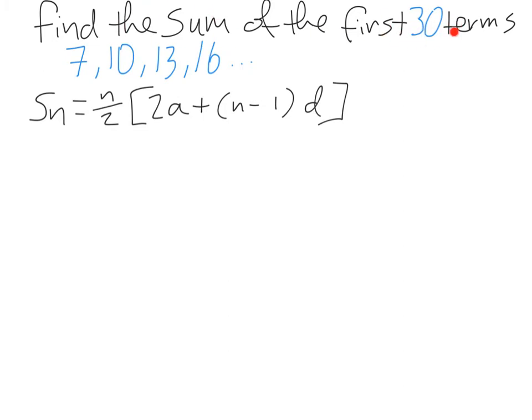So we want to find the sum of the first 30 terms this time, of the sequence 7, 10, 13 and 16. And again we're going to use our series formula, which is in our tables. Another way that they can phrase this question is find S30, which means find the sum of the first 30 terms. So again, we have to decide what is the n, what is the a and what is the d. The n is going to be the number of terms, which is 30. The a is going to be the first term of the sequence, which is 7. And the d is going to be the common difference to get from 7 to 10, 10 to 13, 13 to 16. We're going up in 3, so d is equal to 3.